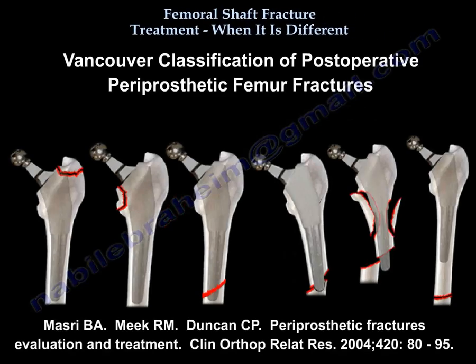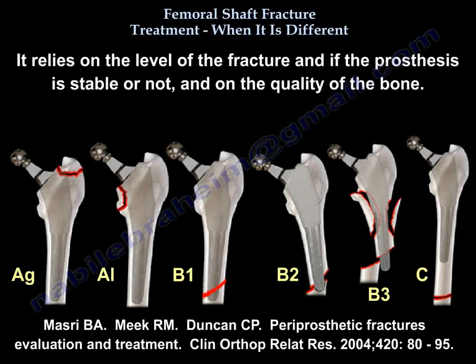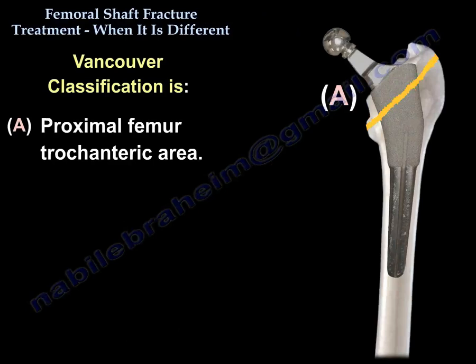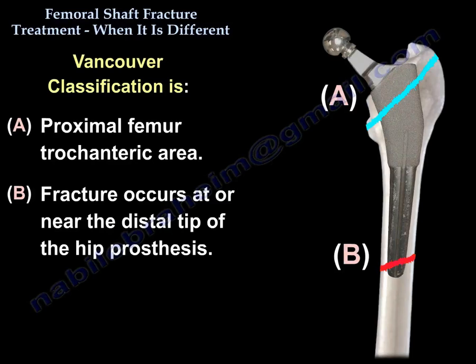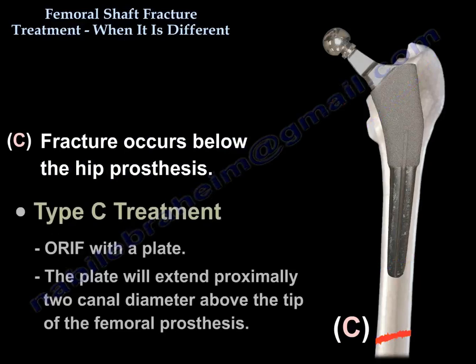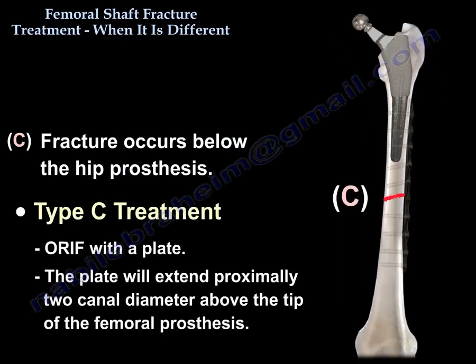Another area of interest is the periprosthetic femur fracture. The Vancouver classification is very popular and it is A, B, and C. It relies on the level of the fracture, whether the prosthesis is stable or not, and on the quality of the bone. Type A involves the proximal femur trochanteric area. Type B fracture occurs at or near the distal tip of the hip prosthesis. Type C fracture occurs below the hip prosthesis. The treatment of Vancouver C is ORIF with a plate that extends proximally two canal diameters above the tip of the femoral prosthesis.